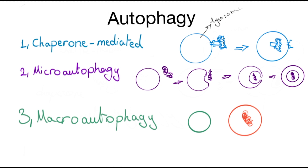So this is a lysosome, and here is the content that is supposed to be digested — the organelle or protein that we want to get rid of. Here we have our chaperone protein, which helps this direct translocation. And eventually the content ends up inside of the lysosome.